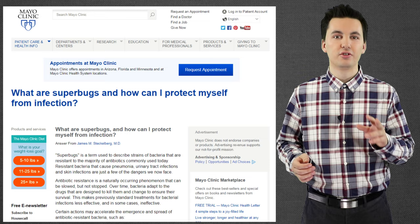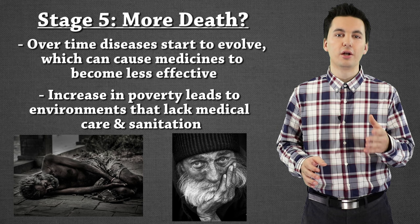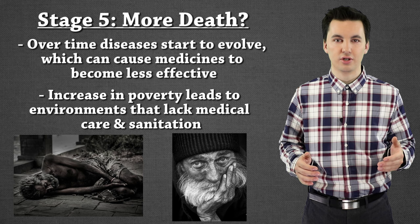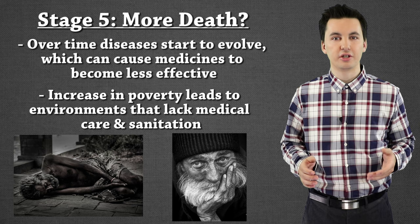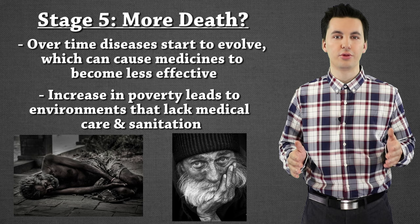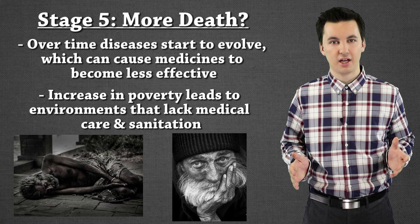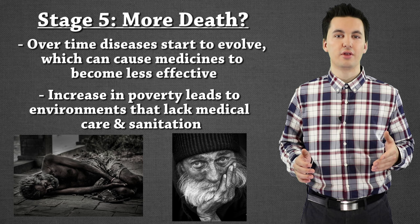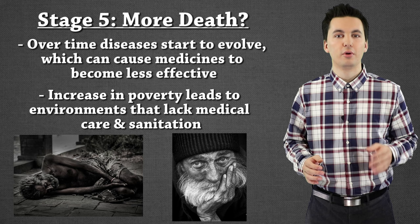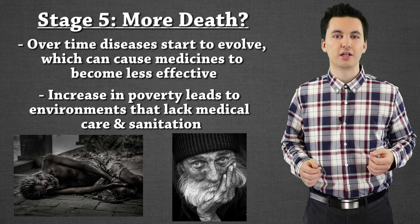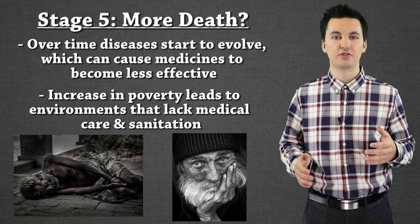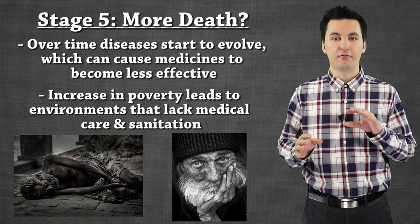The second reason stage five can happen is actually poverty. People who have less money are not always able to afford all their medication. Healthcare is very expensive, and when prescribed something, it's really important to take the full dose. Even if you start to feel okay, you need to complete the entire prescription. If you can't, you might leave some bacteria alive, allowing them to slowly evolve and become resistant. We've seen this with TB in Russian prisons and prisons around the world, where inmates couldn't get enough antibiotics, leading to the development of a TB-resistant strain.